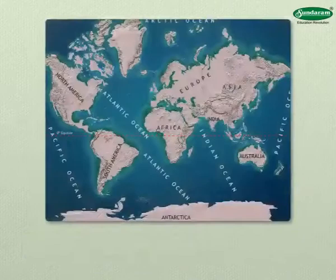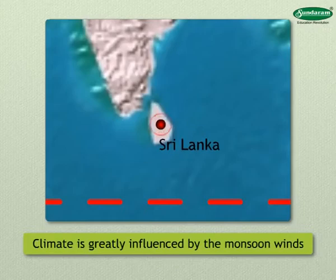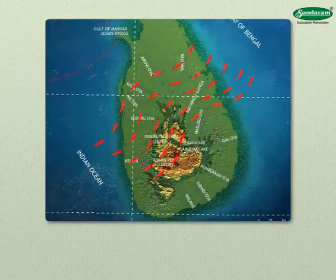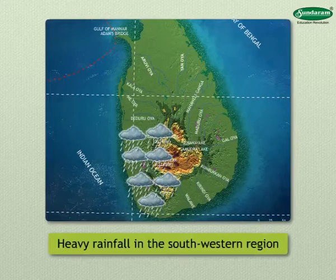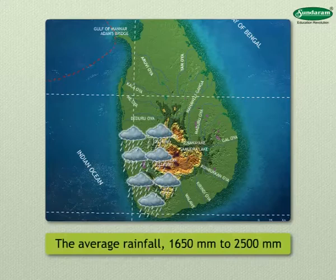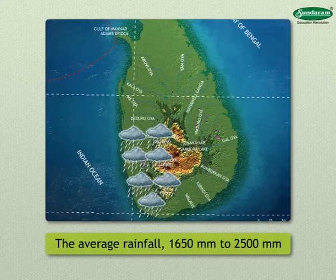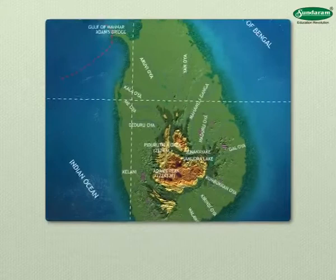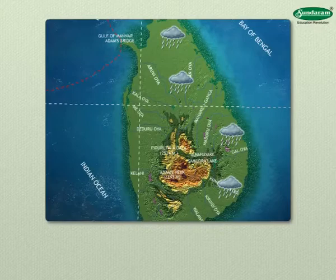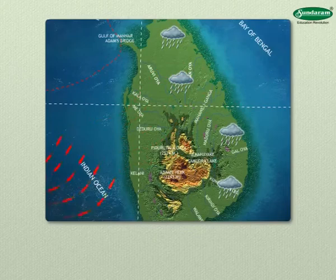Though Sri Lanka is near the equator, the climate is greatly influenced by the monsoon winds. The southwest monsoon winds blow mainly from May to September and cause heavy rainfall in the southwestern region of the country, with average rainfall from 1,650 mm to 2,500 mm. The northern and eastern region receives less rain as it is a rain shadow region. Sri Lanka also receives rain from the northeast monsoon winds in the month of January, in all areas of the north and east.